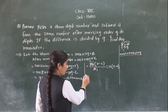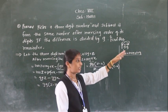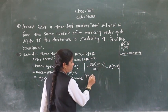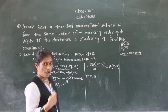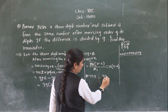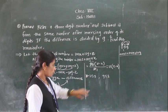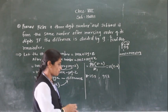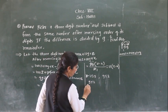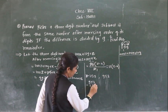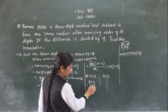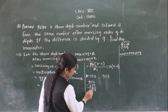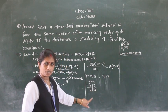Now we will verify this with an actual number. Suppose the number Pranam picks is 259. After reversing the digits, the number becomes 952. Pranam wants to subtract the original from the reversed number. So 952 minus 259: 12 minus 9 = 3, borrow; 15 minus 6 = 9, borrow; 9 minus 3 = 6. So the difference is 693.